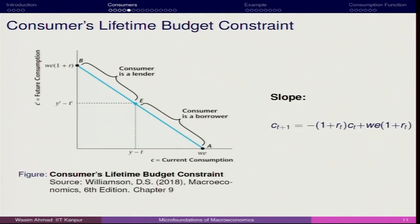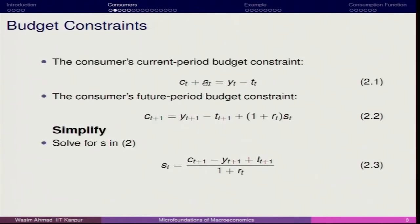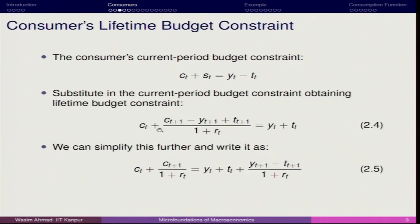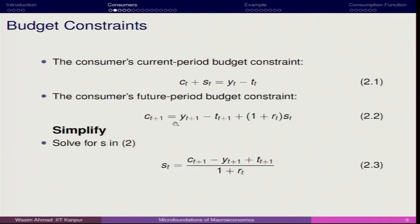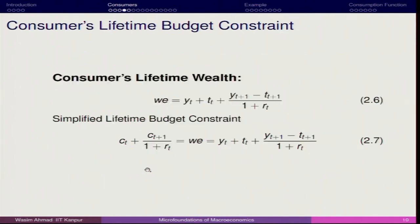So we examined this part and now we will go further. We derived the first period, then the current period, then the future period — one period, second period. We derived the saving because in the first period he is saving some amount, and then we superimpose this into the budget constraint. Here if we substitute into the current period, then you can have Ct plus Ct+1 minus Yt+1 plus Tt+1 upon 1 plus Rt, which is equivalent to Yt plus Tt. Finally, we derived the lifetime budget constraint — this is the simplified lifetime budget constraint.